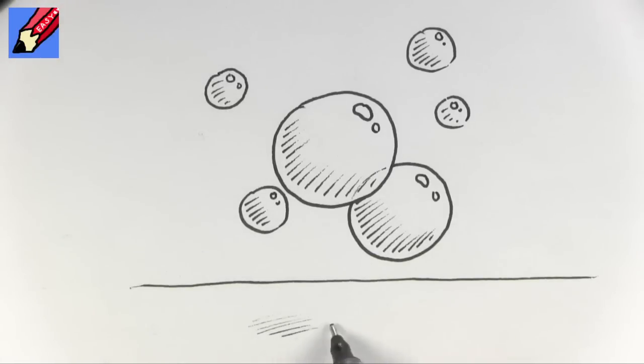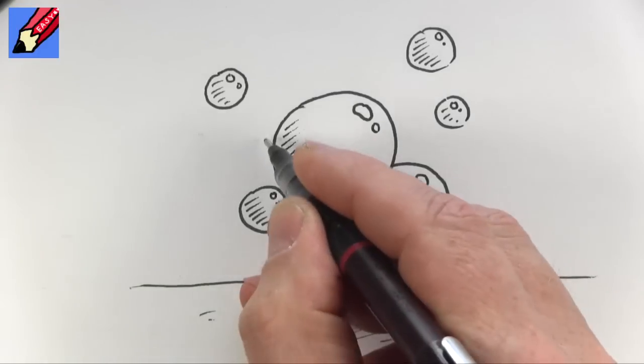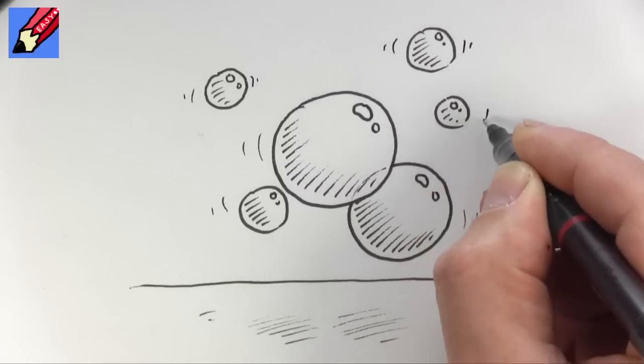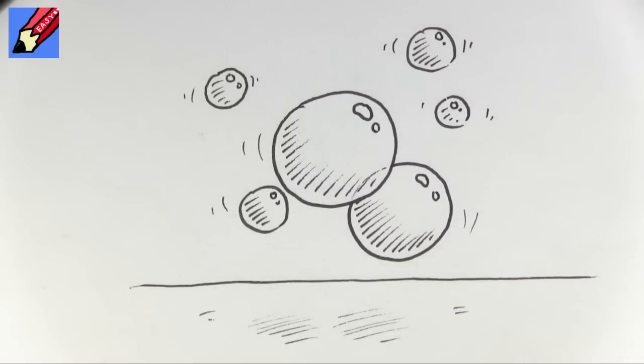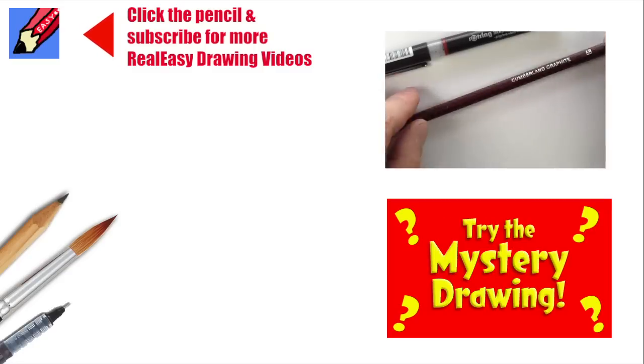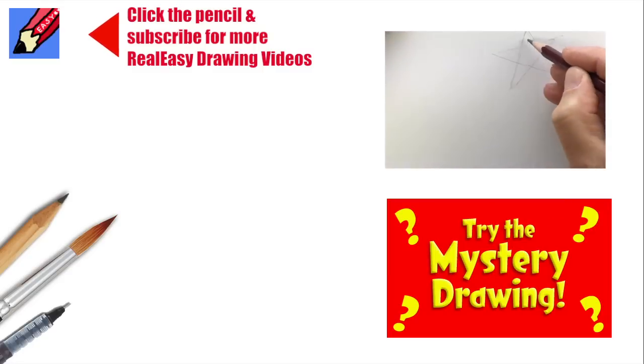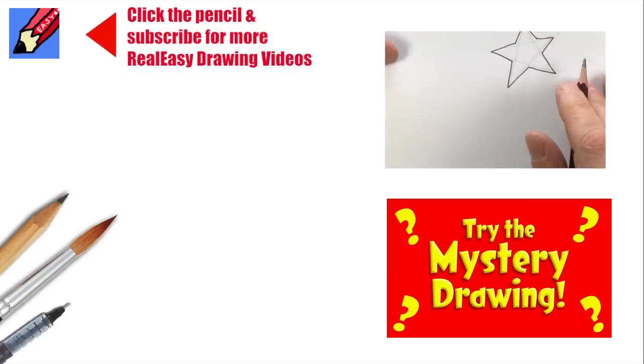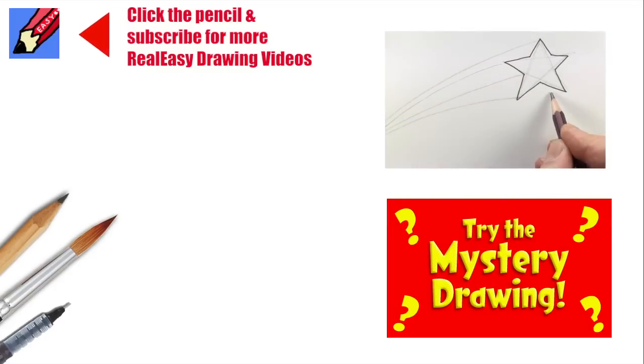You can make them a little bit more light and fluffy and airy and floating around with some little kind of wobble lines as well. There you are, how to draw bubbles. Well I hope you enjoyed that and if you did why not go and learn how to draw a shooting star or have a go with the mystery drawing.